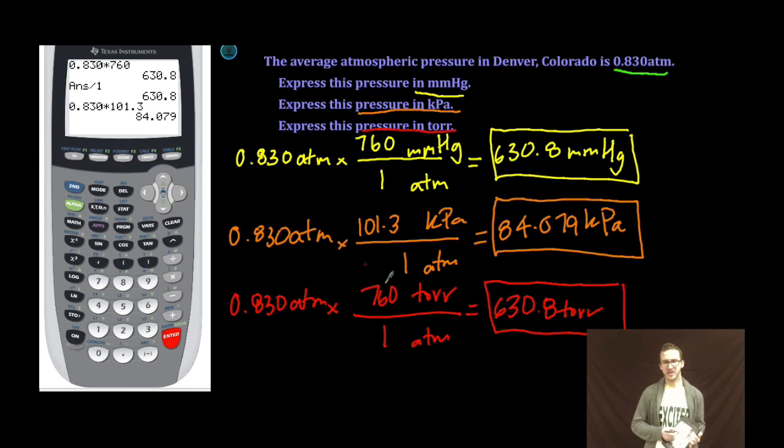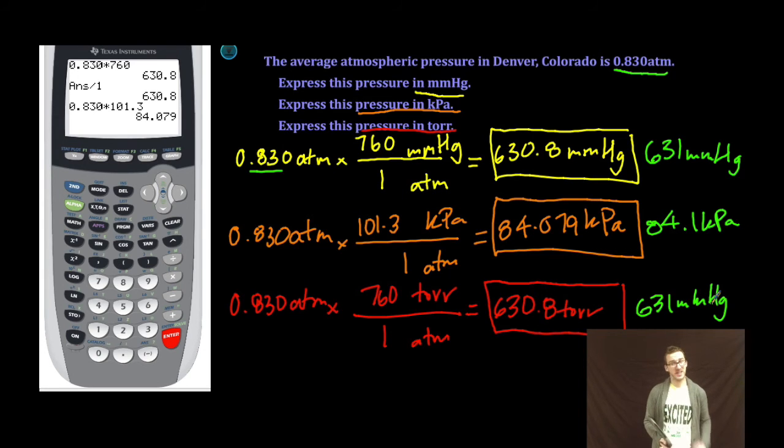Now, before we finish up, let's check sig figs. I should have three sig figs in my final answer. So here, 631 millimeters mercury. Here, 84.1 kilopascals. And here, 631 torr. Those sig figs, never going to go away. Will haunt you forever.